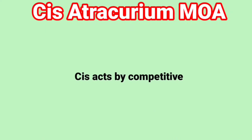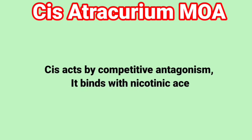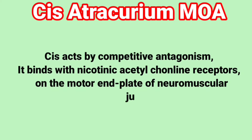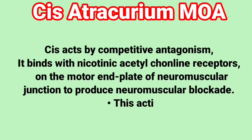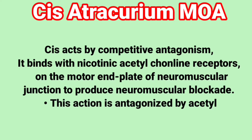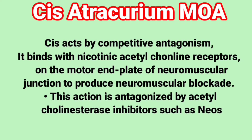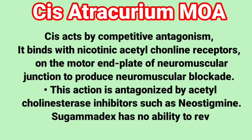Cisatracurium Mechanism of Action: Cisatracurium acts by competitive antagonism — it binds with nicotinic acetylcholine receptors on the motor end plate of the neuromuscular junction to produce neuromuscular blockade. This action is antagonized by acetylcholinesterase inhibitors such as neostigmine. Sugammadex has no ability to reverse its action.